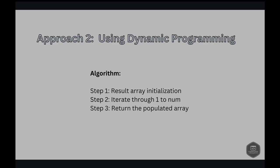The algorithm works as follows: start with the result array filled with 0s, then iterate through 1 to n. For each number, calculate the number of 1s based on its half — we right shift by 1, which is essentially halving. Then add 1 if it's odd, which we check using a bitwise AND with 1. Finally, return the populated array.